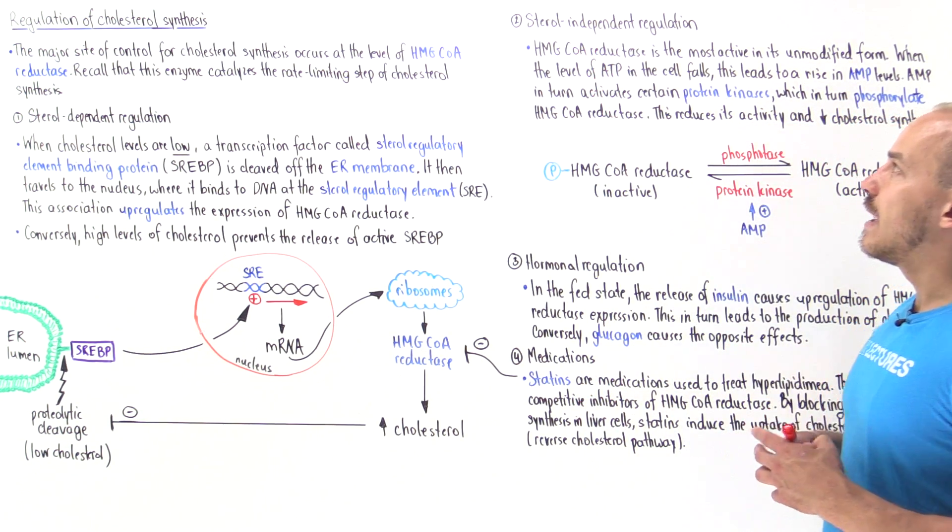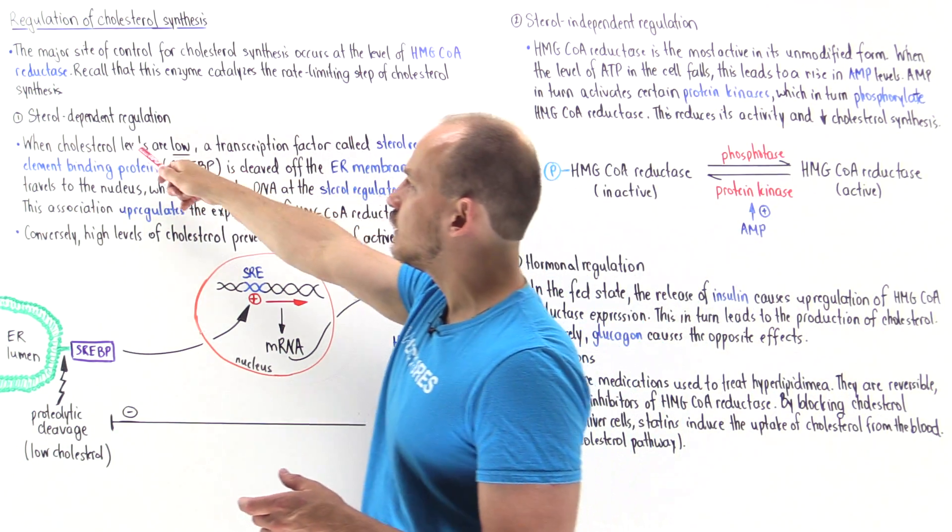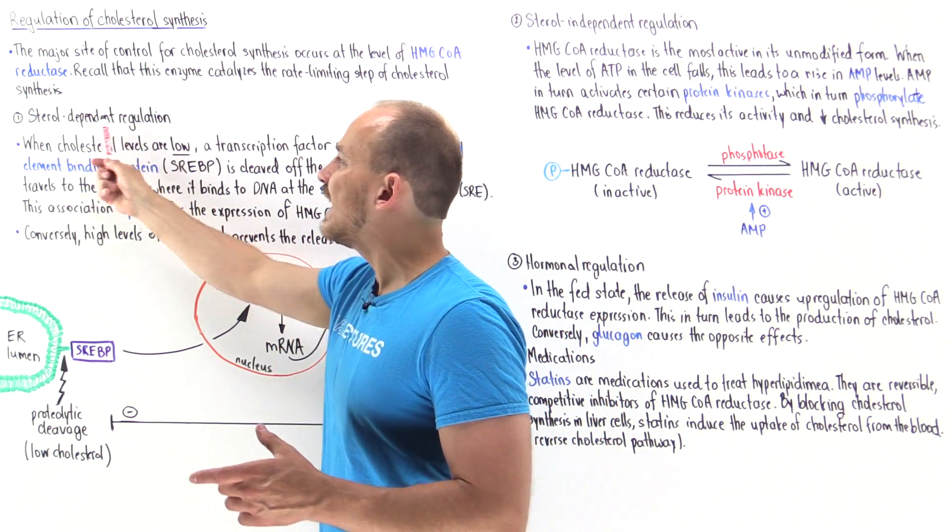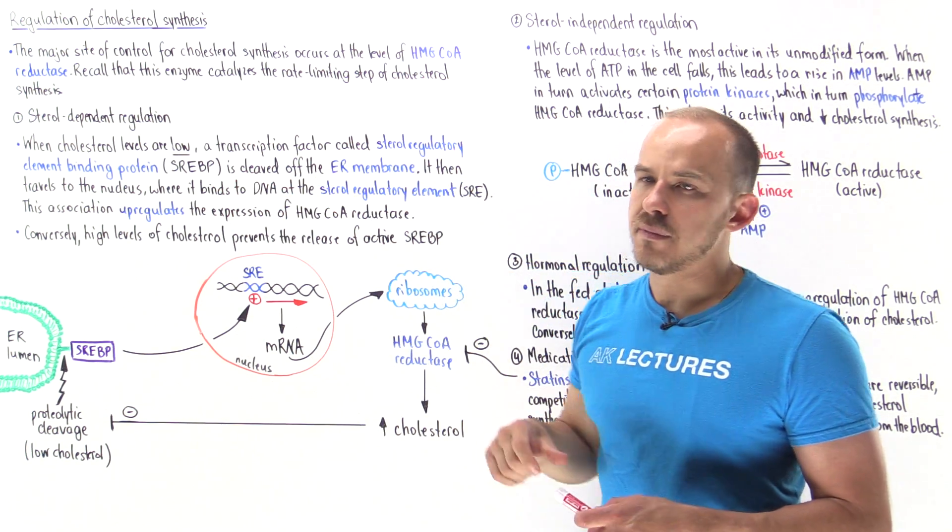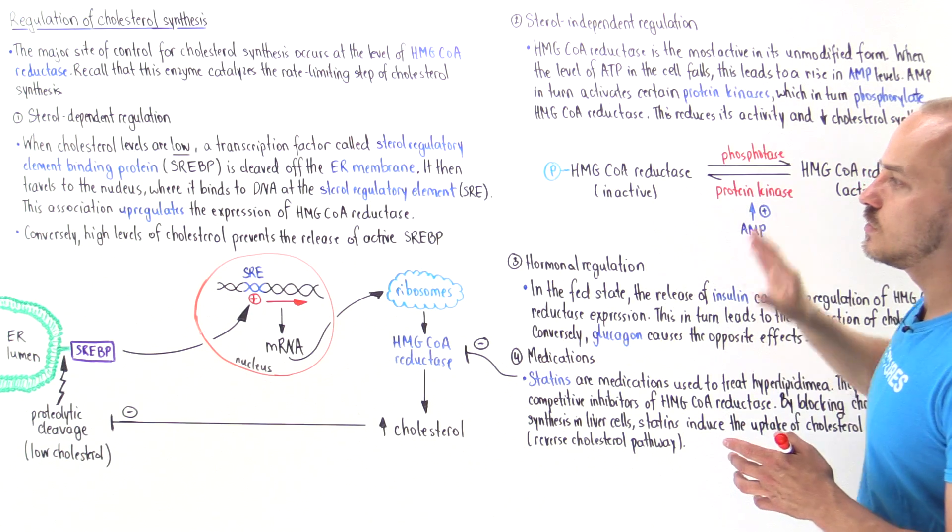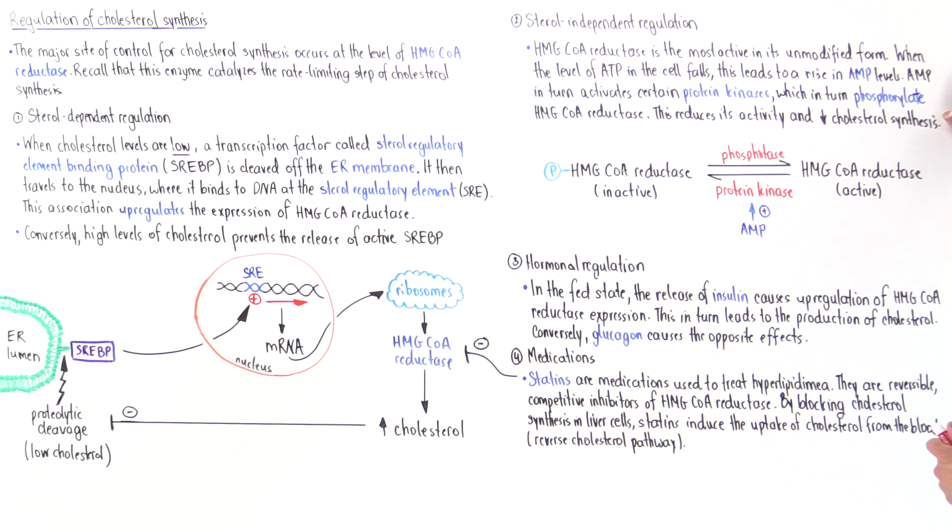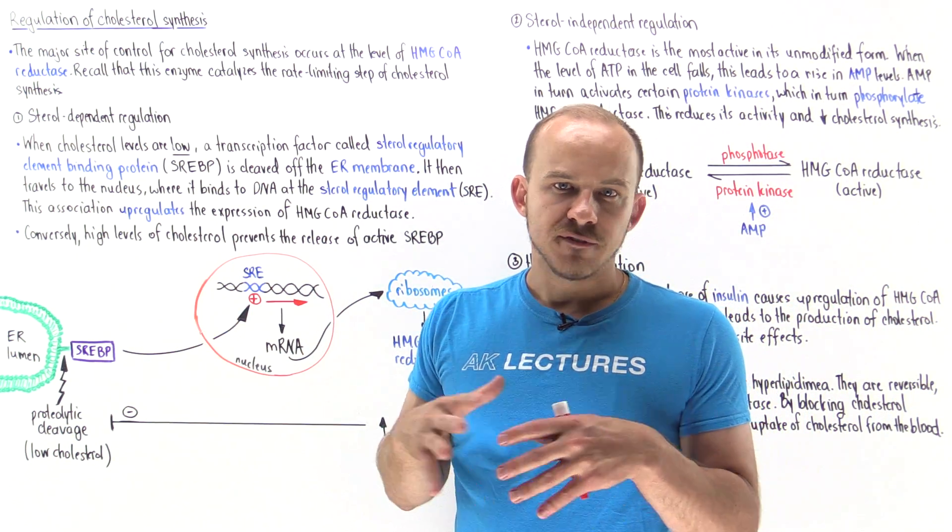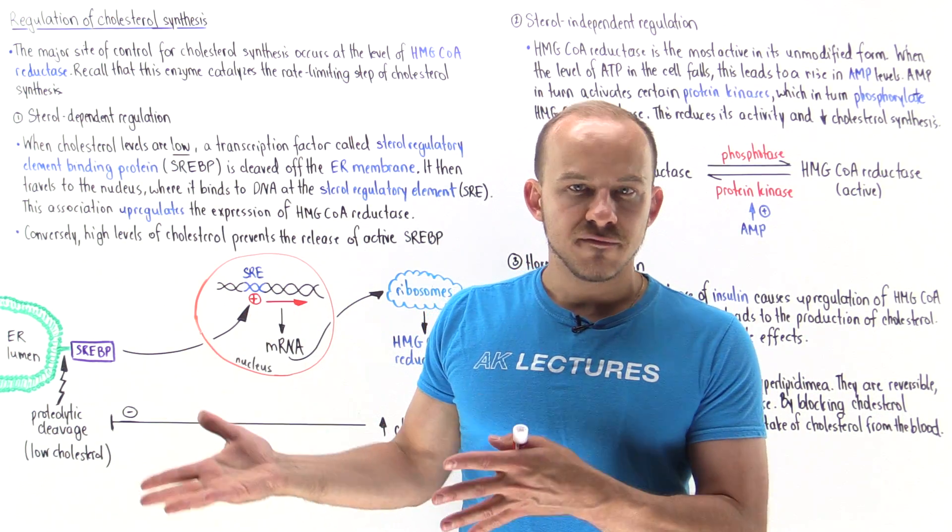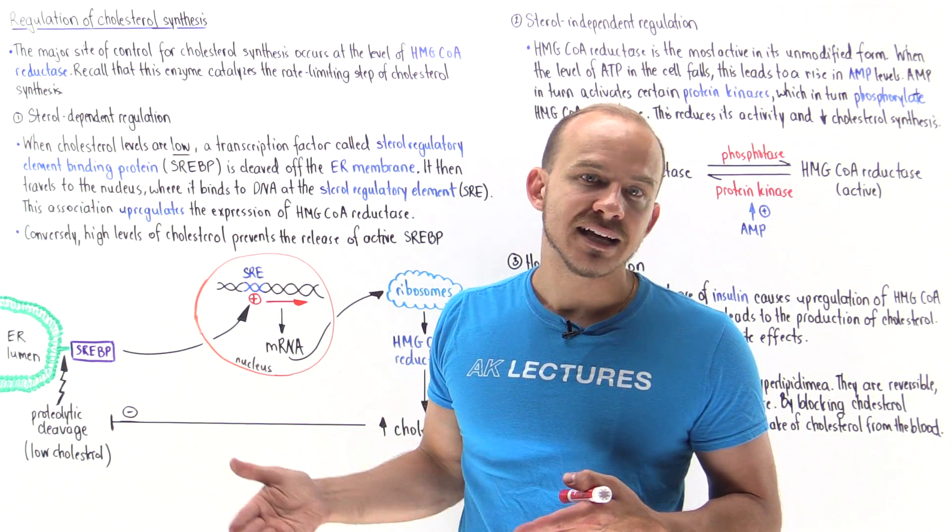Now let's move on and talk about the sterol independent regulation. Sterol dependent means we're dealing with a binding protein, the sterol regulatory element binding protein. But sterol independent regulation means we don't deal with this sterol protein. HMG-CoA reductase is an enzyme that functions most effectively if it's not modified. But if we modify it with phosphorylation for example, this will decrease its activity making it inactive.